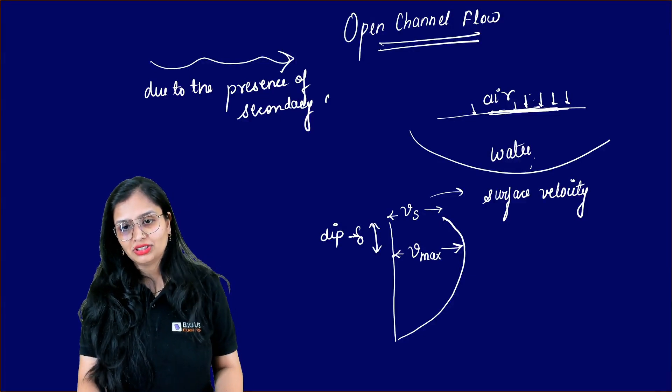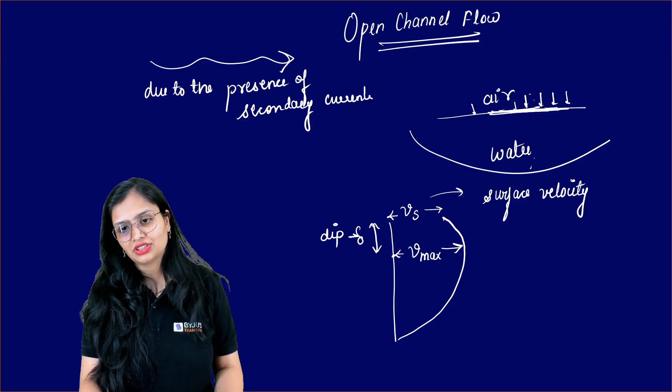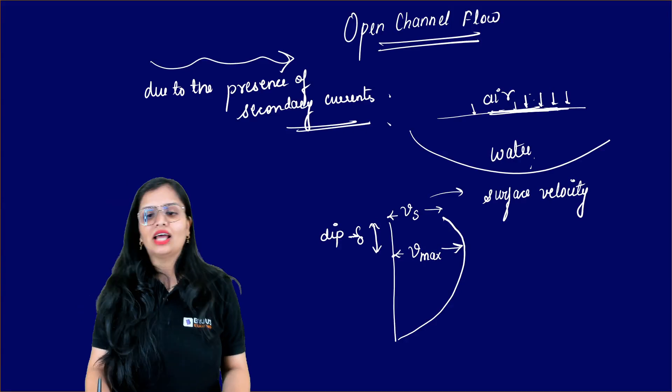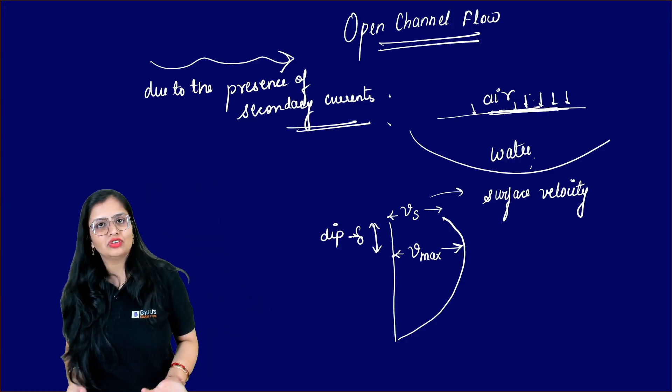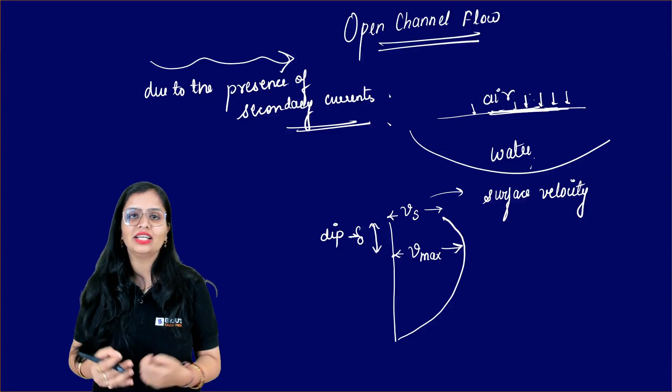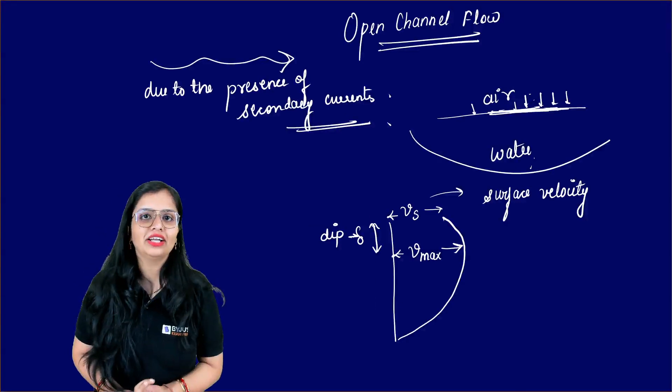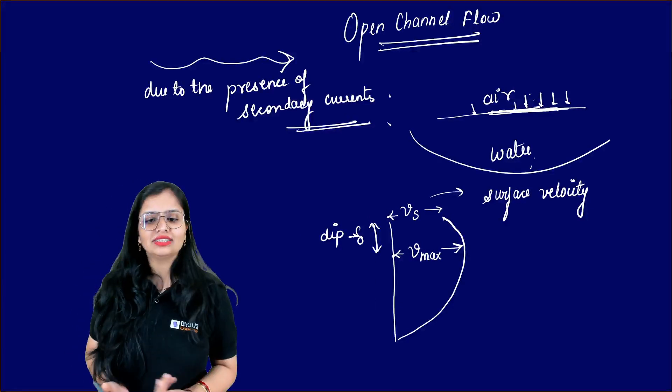And you know that for calculating average velocity, we have two-point method. Like we calculate velocity at 0.2y, 0.8y and we divide it. So all these are there.